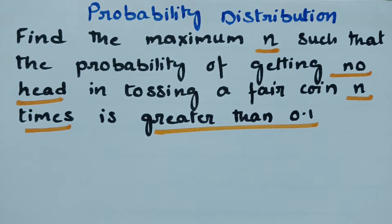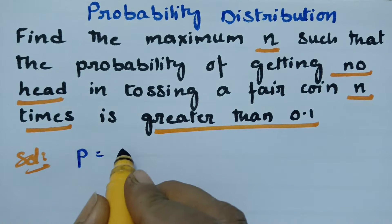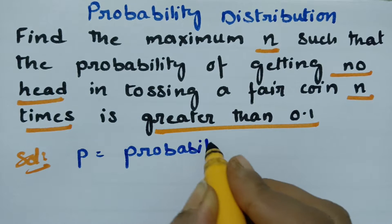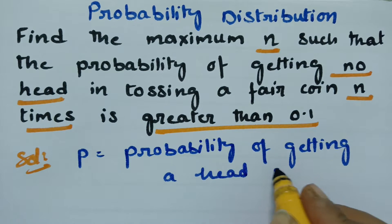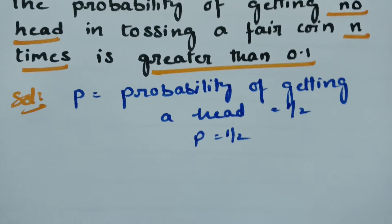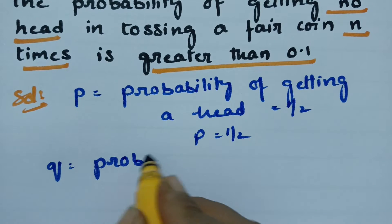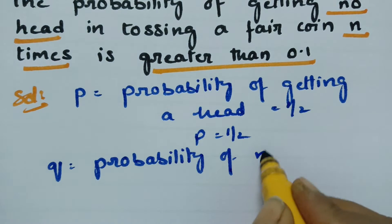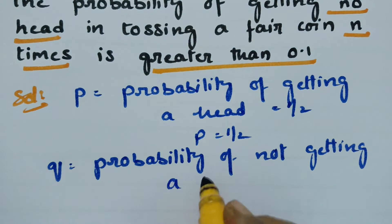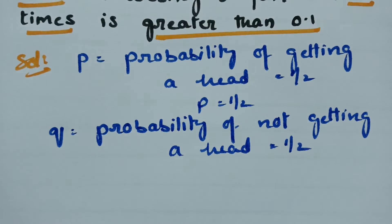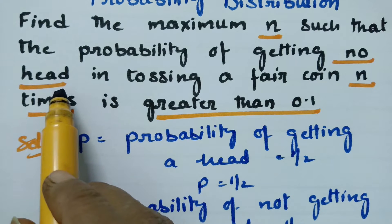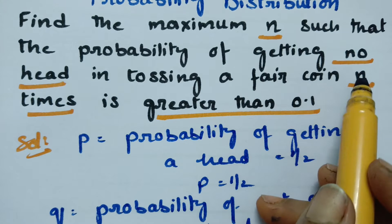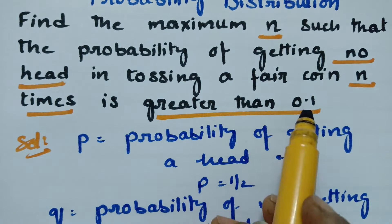First of all, everybody knows that the probability of getting a head is half and the probability of not getting a head is also half. So P is equal to half, and Q is equal to probability of not getting a head, which is again half. We have to find the maximum n such that the probability of getting no heads — meaning r is equal to 0 — in tossing a fair coin n times is greater than 0.1.